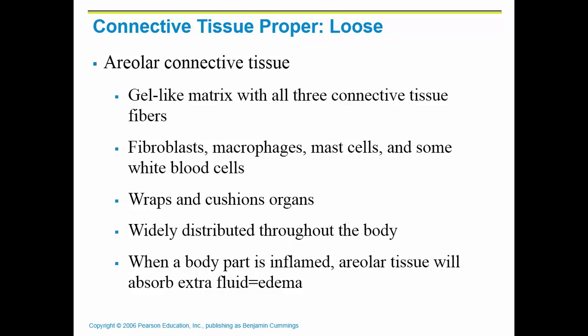The first type we're going to look at is called loose or areolar connective tissue. Areolar or loose connective tissue has a gel-like matrix. It is made up of many different types of cells that we talked about last time: fibroblasts, macrophages, mast cells, and some white blood cells. Its function is to wrap or cushion organs. We have those parietal and visceral serous membranes that we talked about, and connective tissue is attached to that, helping protect and wrap and cushion those organs.